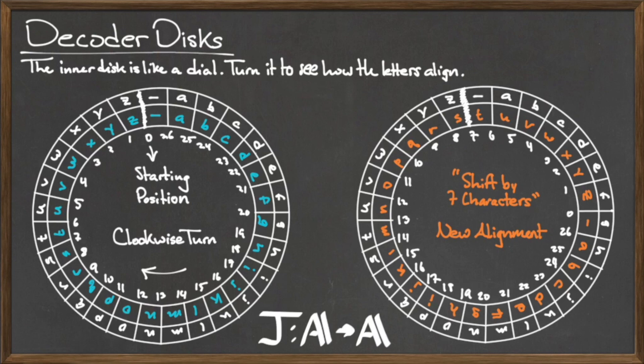The disk on the left, in which every character is perfectly aligned in both the inner and outer disks, we will refer to as the starting, or home, position. This process of encryption we can view as a function J, which is a function from the set of characters to the set of characters.